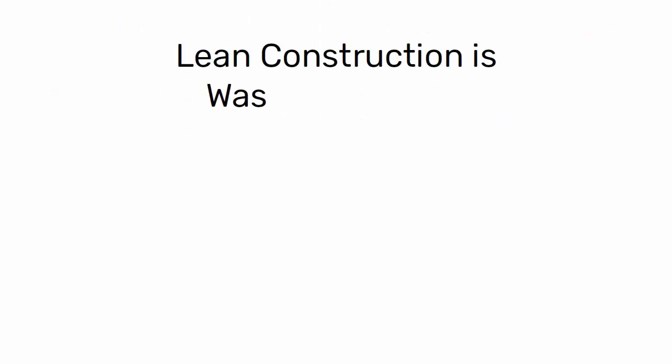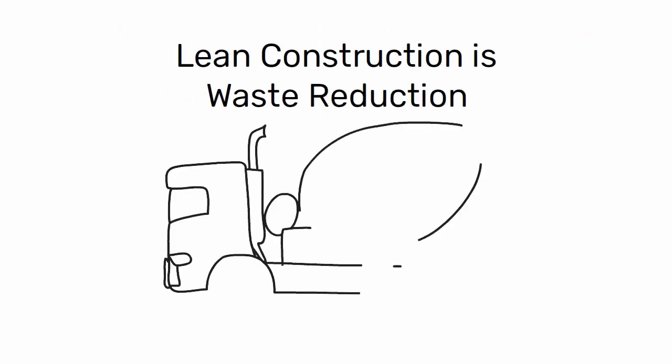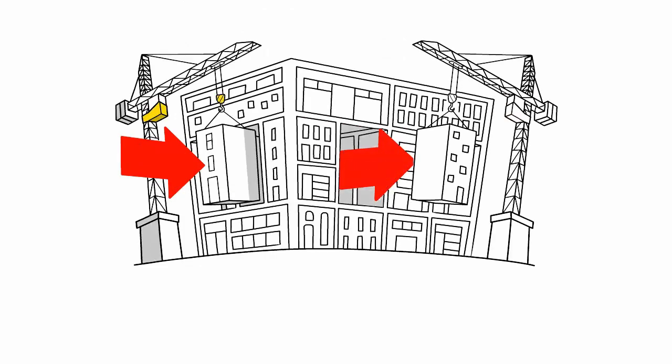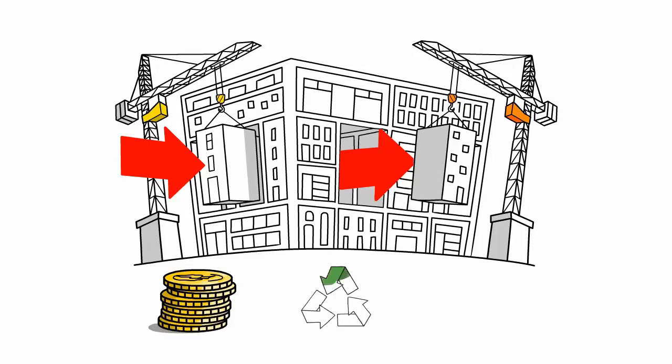Another important aspect of lean construction is waste reduction in inventory and transportation. By reducing the amount of materials on site and ensuring that deliveries are made only when needed, construction companies can reduce costs, minimize waste, and increase efficiency.